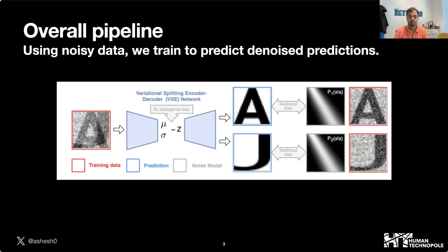We achieve this with our variational splitting encoder-decoder network, which we have adapted from hierarchical variational autoencoders. We have the KL divergence loss and the likelihood loss.